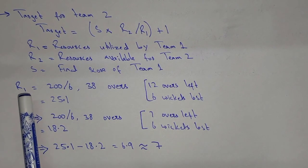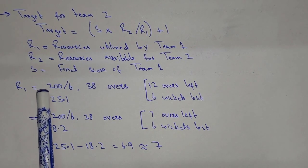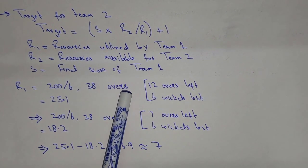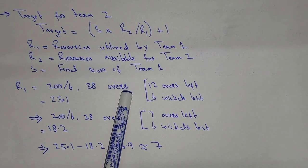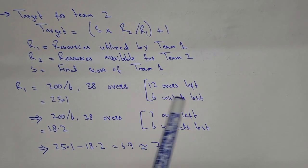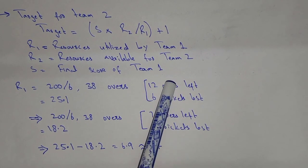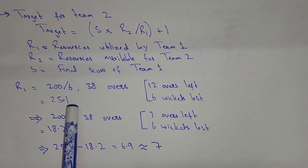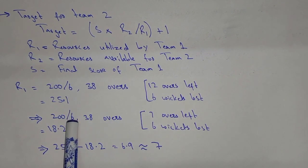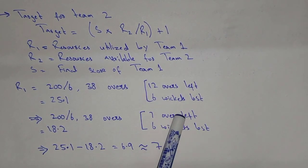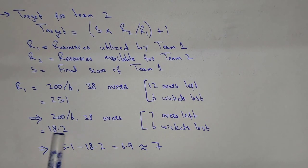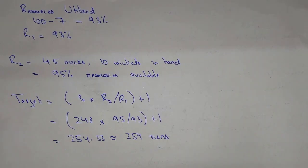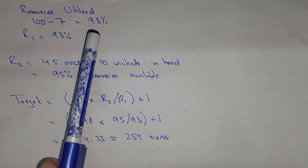First we calculate R1 — resources utilized by Team 1. When Team 1 scored 200 runs for the loss of 6 wickets in 38 overs, they expected a 50-over game, so there were 12 overs left and 6 wickets lost — giving a table value of 25.1. When play resumed for a 45-over game, the table value for the same wickets lost is 18.2. So 25.1 minus 18.2 equals 6.9, approximately 7. Resources utilized by Team 1: 100 minus 7 equals 93%.